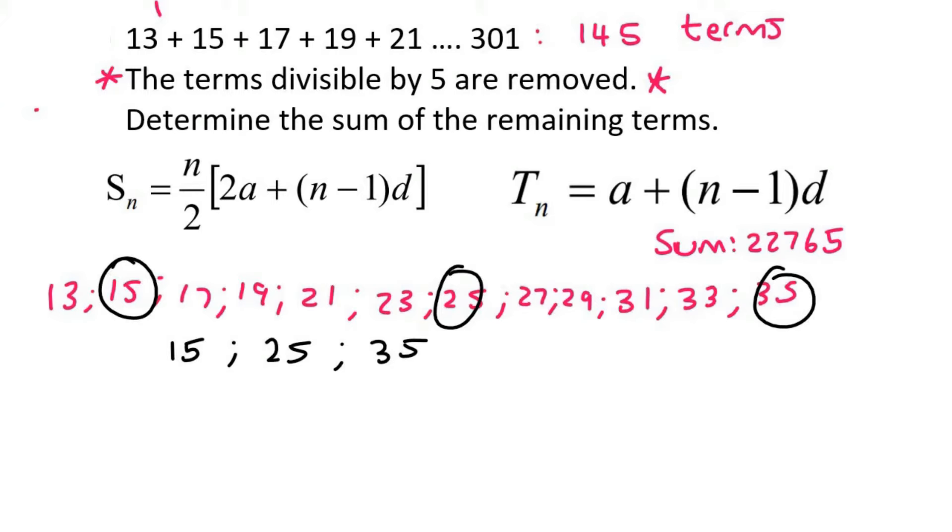So what we need to do now is try to work out the sum of this pattern. The problem is we don't know where it stops. However, we do know that in the original sequence, the last term is 301. So we can't go past that. So then, does this mean that our last term on this one should be 301? Well, no, because that's not divisible by 5.